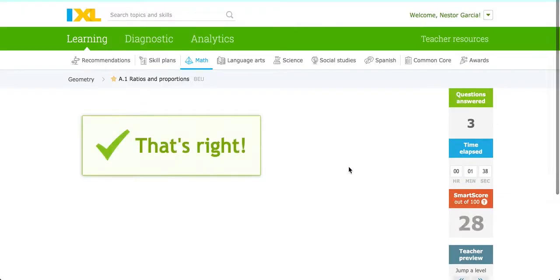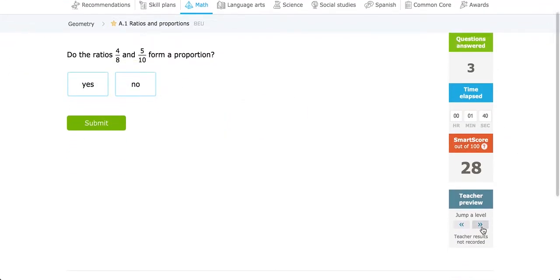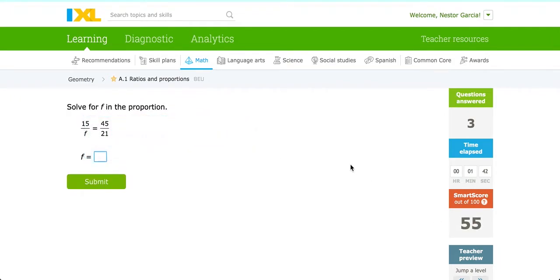Let's go ahead and skip over to a section where we actually have to figure out one of the missing values. So given this equation here, we will go back to the cross product rule. We have 15 to F is equal to 45 to 21.